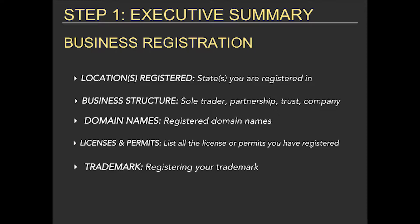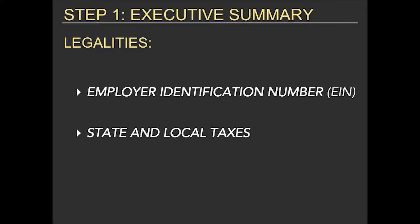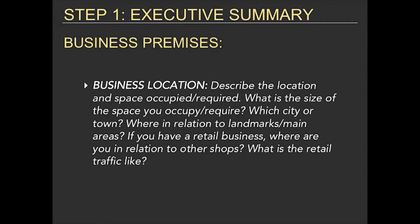Licenses and permits: list all the licenses or permits you have registered. Trademark: note details on registering your trademark. Legalities: include your employer identification number (EIN). Business premises and business location: describe the location and space occupied or required.